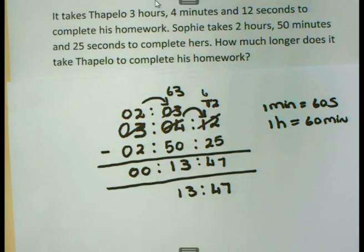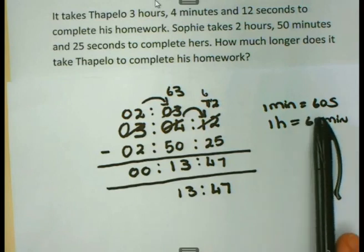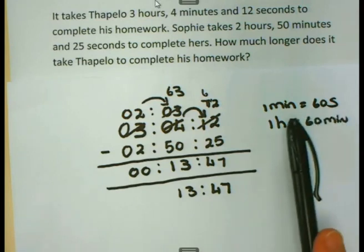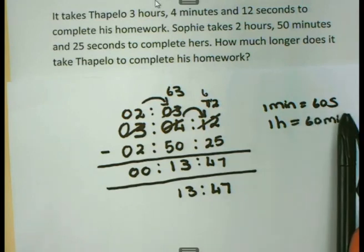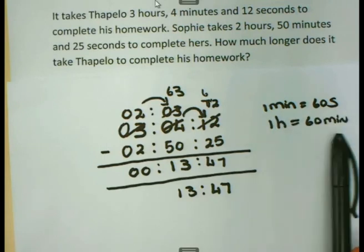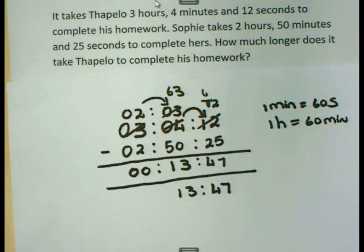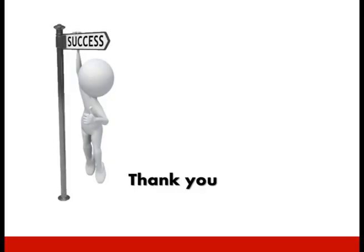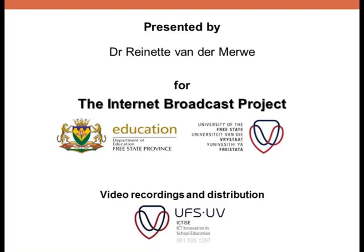So to summarize, it is very important that when we calculate elapsed time, that we must remember that every time we are going to borrow from one of the other amounts, what is the conversion factor? 1 minute is 60 seconds, 1 hour is 60 minutes. And that is the end of our lesson about elapsed time. Thank you.